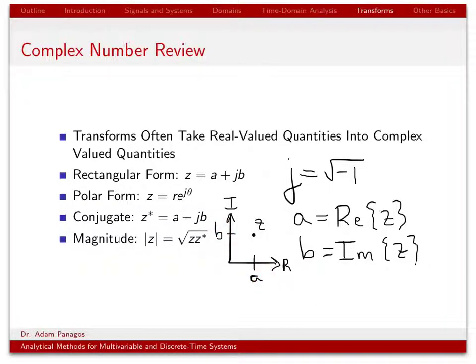Another way to write complex numbers is in polar form, where we write a complex number in terms of its magnitude R and its angle theta. In the complex plane, R is the distance from the origin, and theta is the angle the complex number makes. These are the two common ways to write complex numbers, and the way you visualize them is in the complex plane.